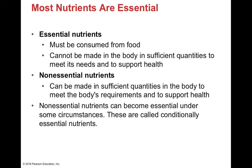Essential nutrients are nutrients you cannot make in the body in sufficient quantities to meet the body's needs and support health — you must obtain them from food. Non-essential nutrients are those we can manufacture in our body in sufficient quantities to meet our daily metabolic requirements and support health. However, sometimes non-essential nutrients can become essential — these are called conditionally essential nutrients. For example, if we become depleted of certain nutrients, we will have to get more of that nutrient from an exogenous source.